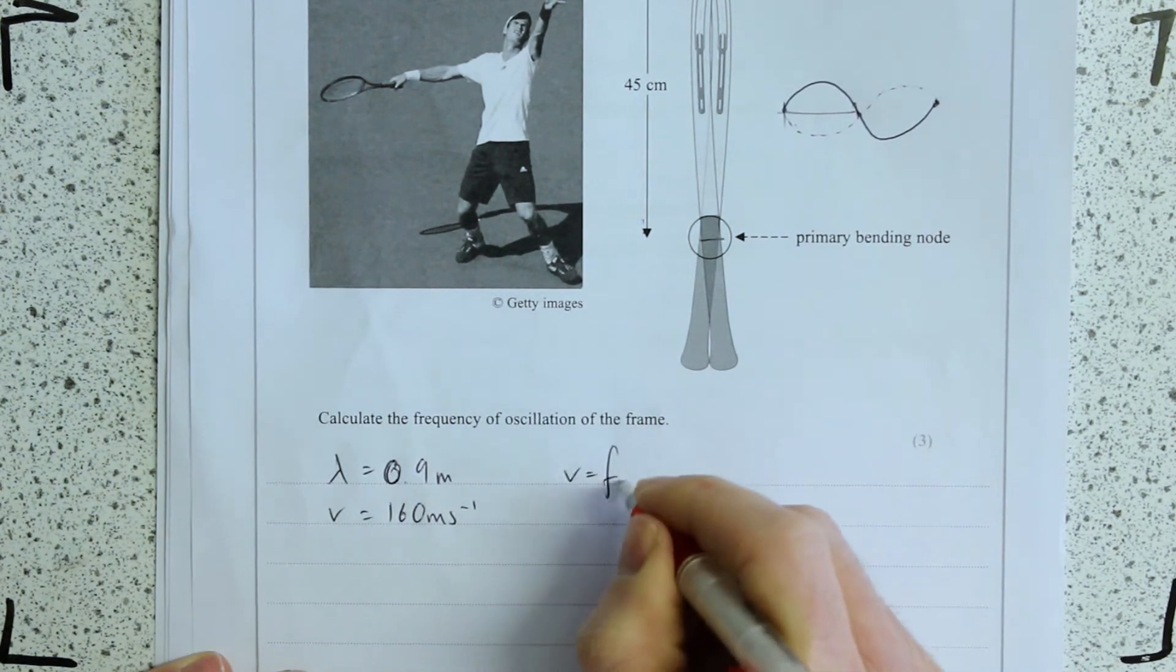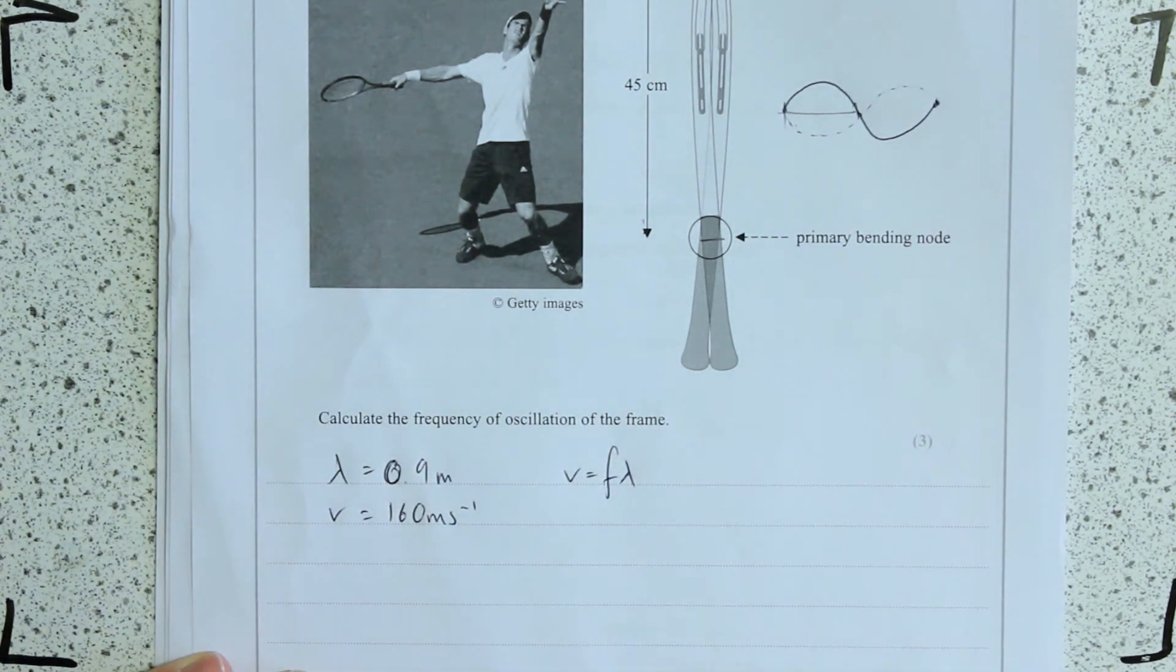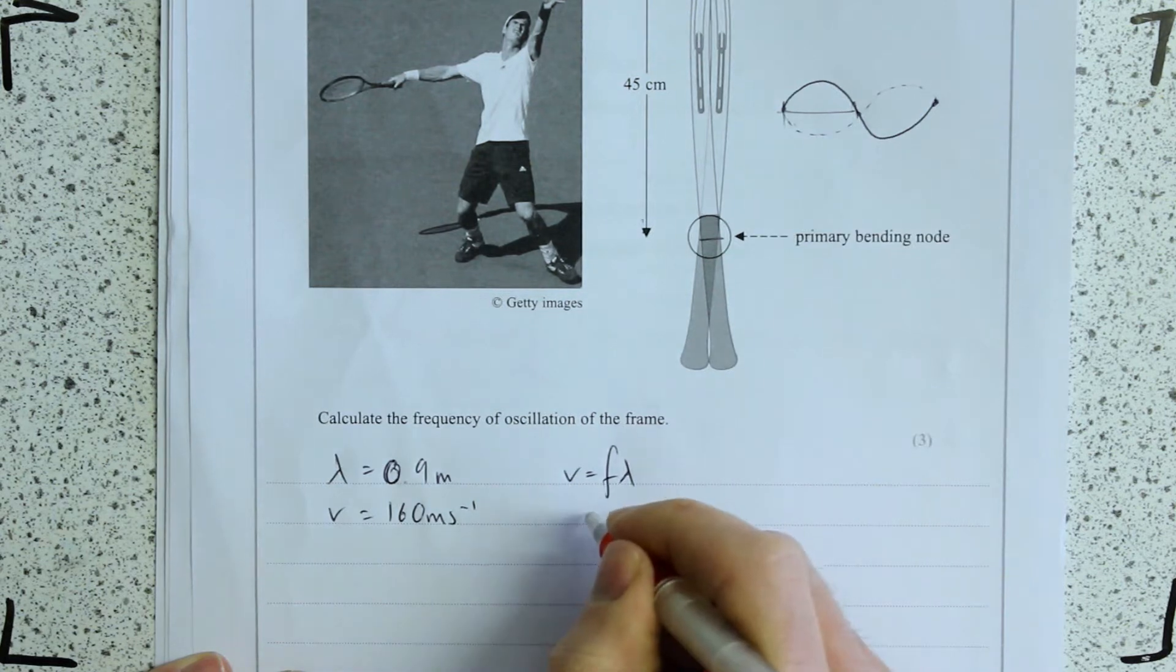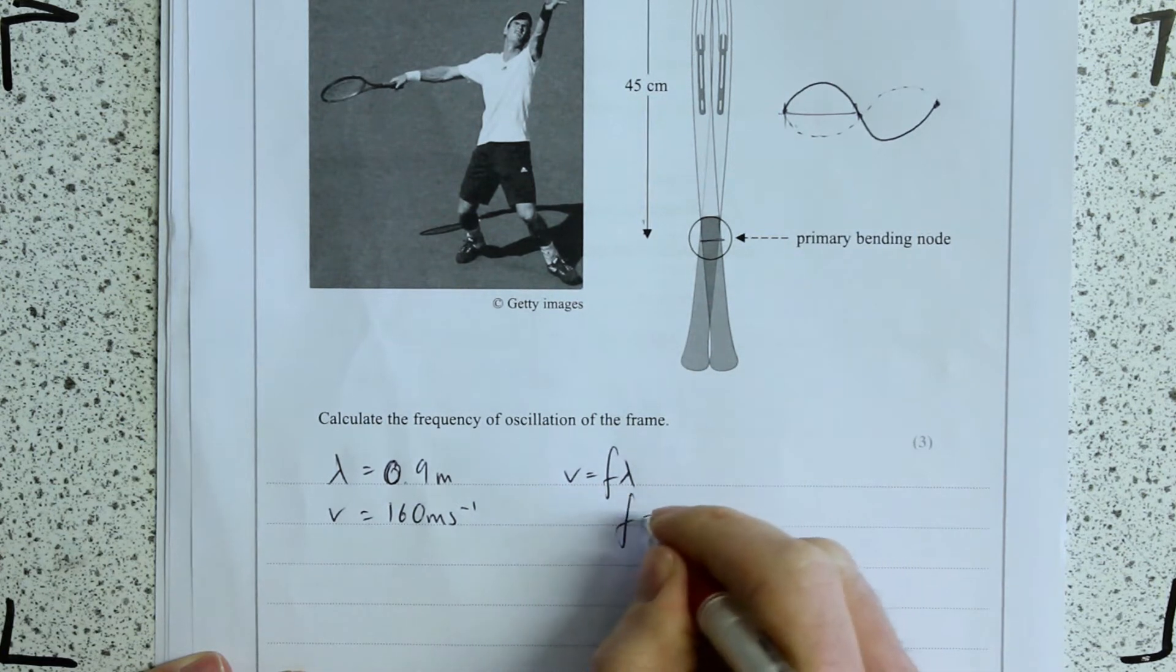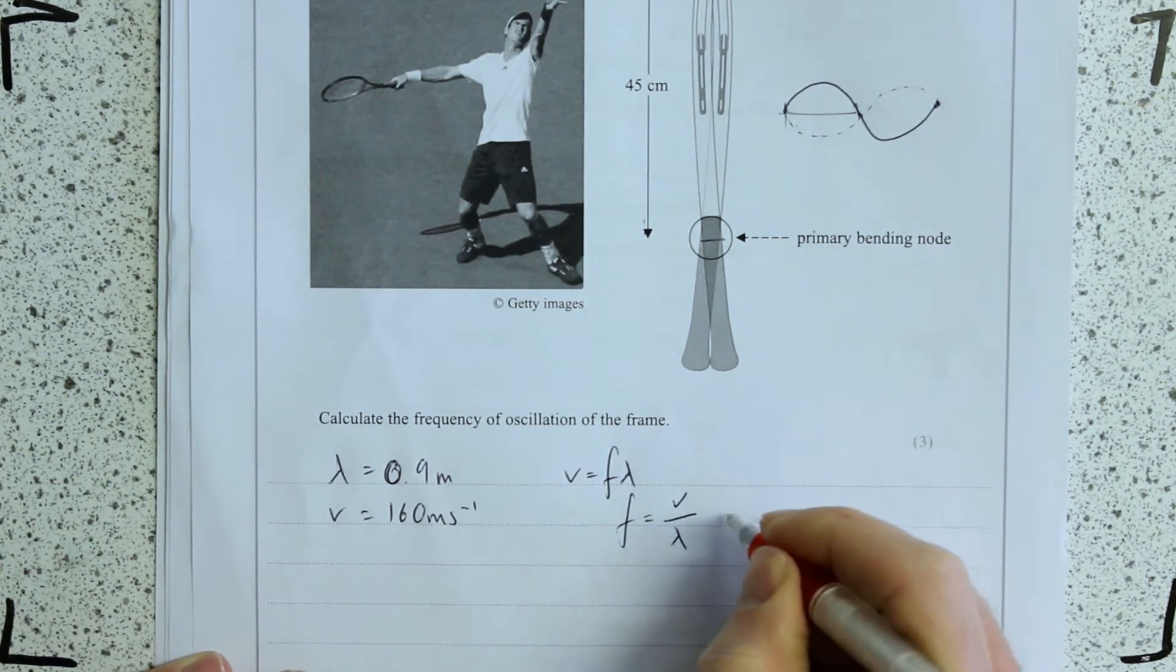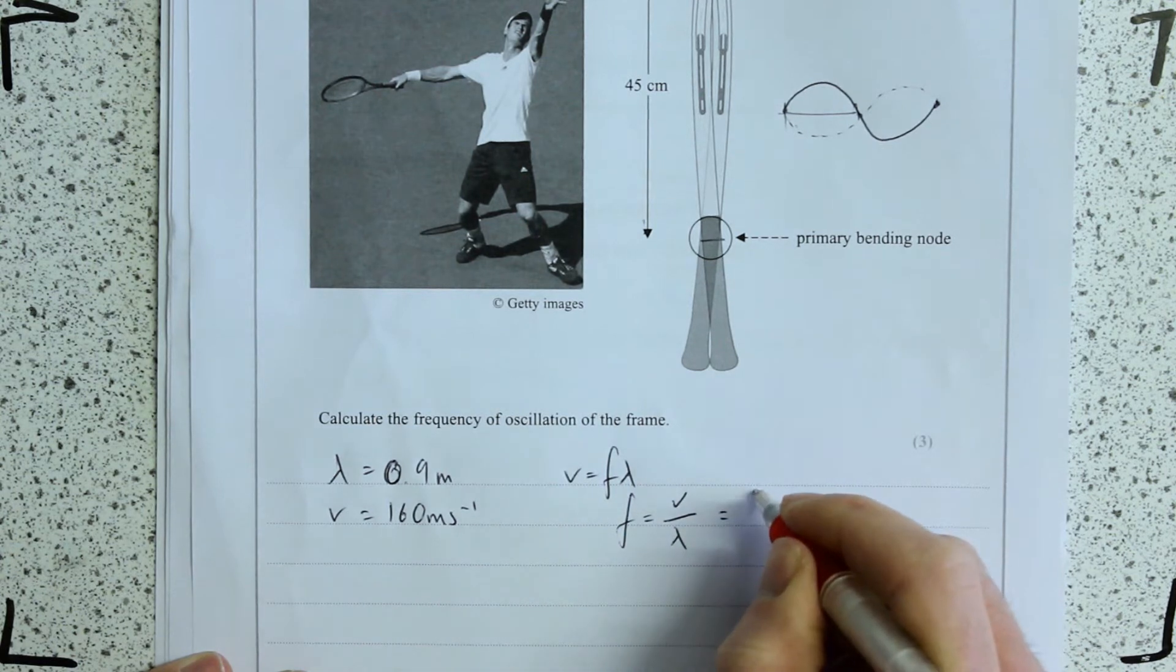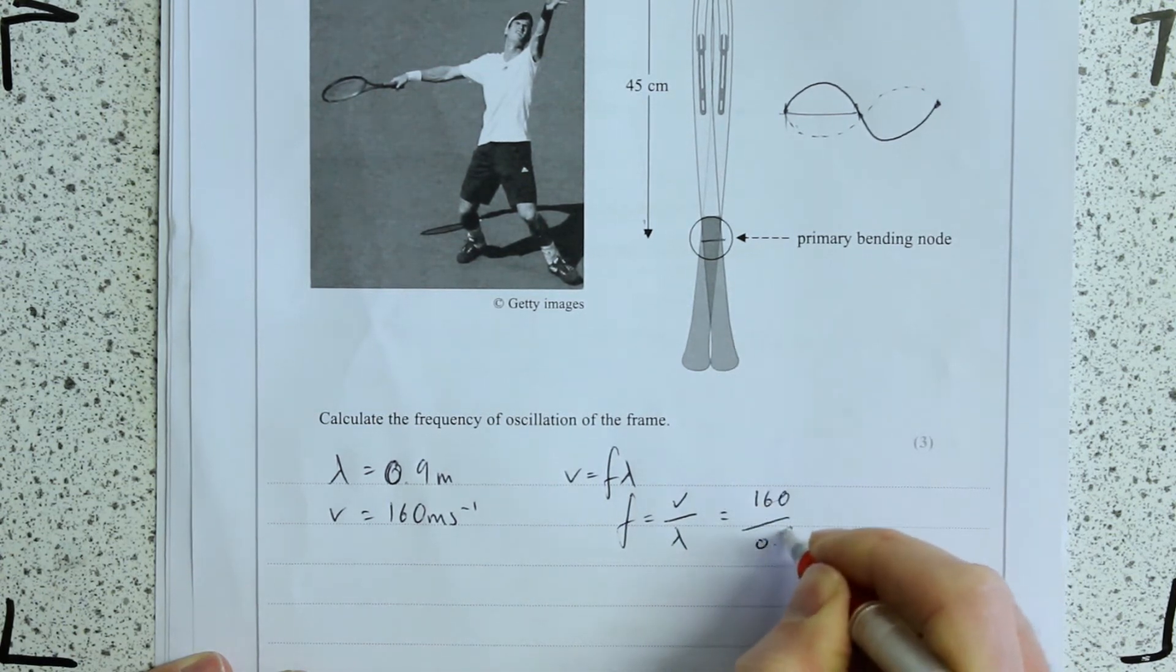Hopefully you don't really need to go to the equation sheet to find the wave speed equation, because it's a big part of your GCSE. You're going to rearrange for F, so F is V over lambda.